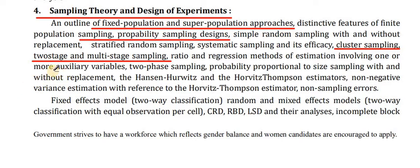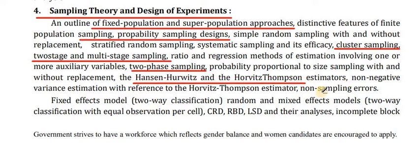Ratio and Regression methods of estimation involving one or more auxiliary variables, 2-phase sampling, Probability Proportional to Size (PPS) sampling with and without replacement, the Hansen-Hurwitz and Horvitz-Thompson Estimators, Non-negative variance estimation with reference to the Horvitz-Thompson Estimator, and non-sampling errors.